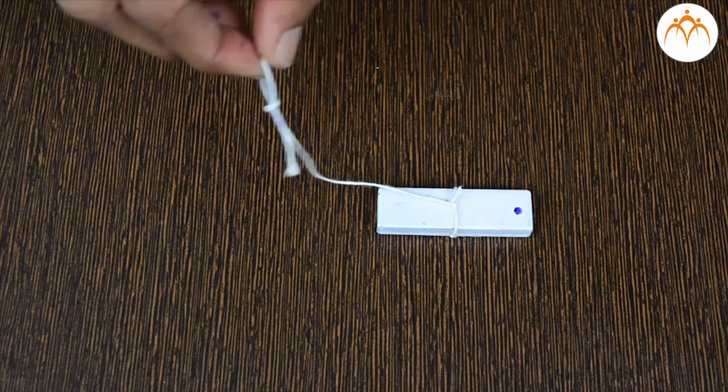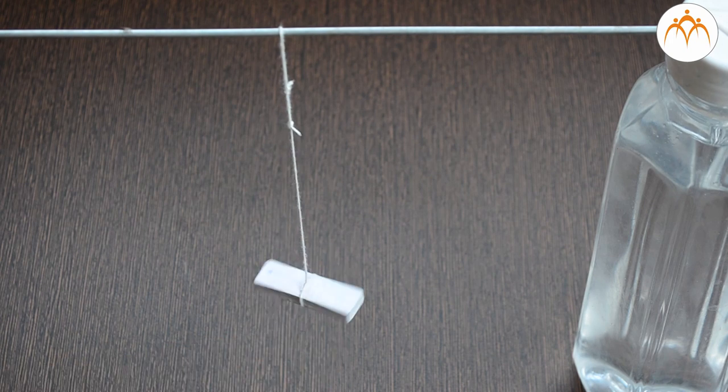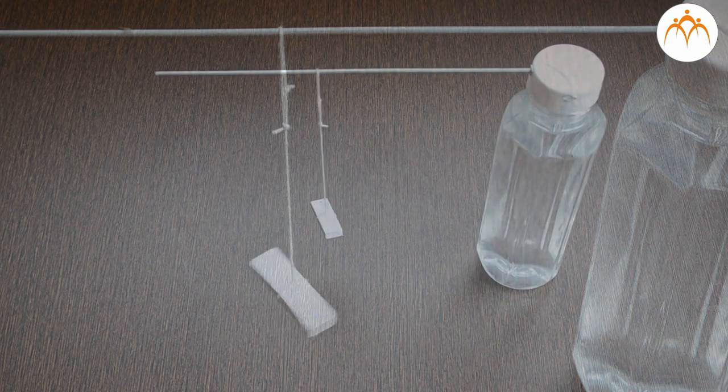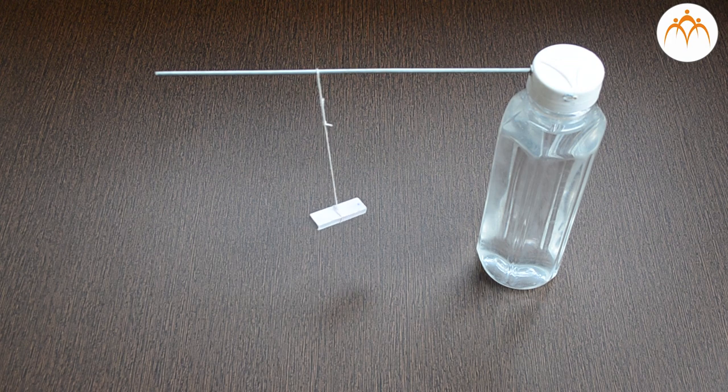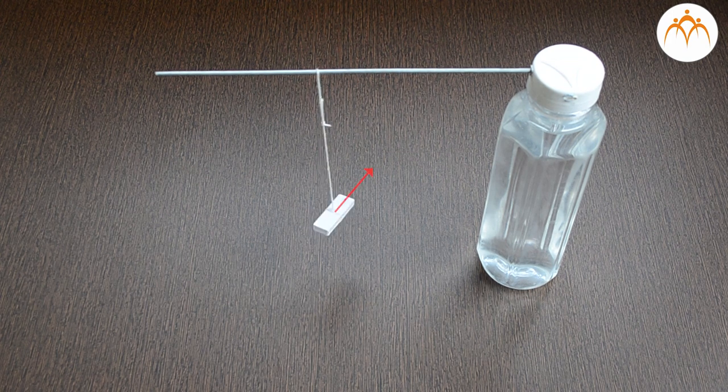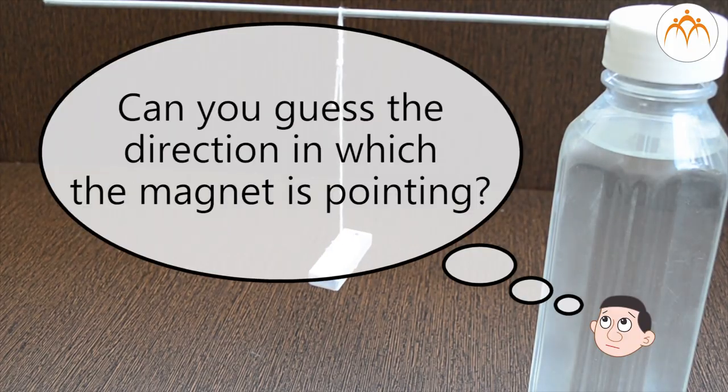Let me take a thread and tie the magnet with it. If I suspend it and rotate it freely, the end marked with the dot always seems to settle in one particular direction. Can you guess what that direction is?